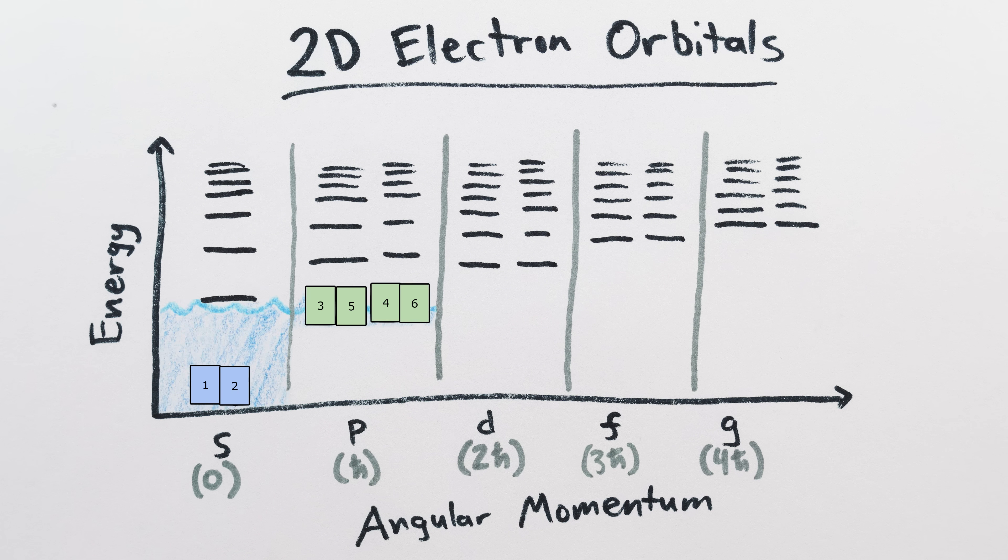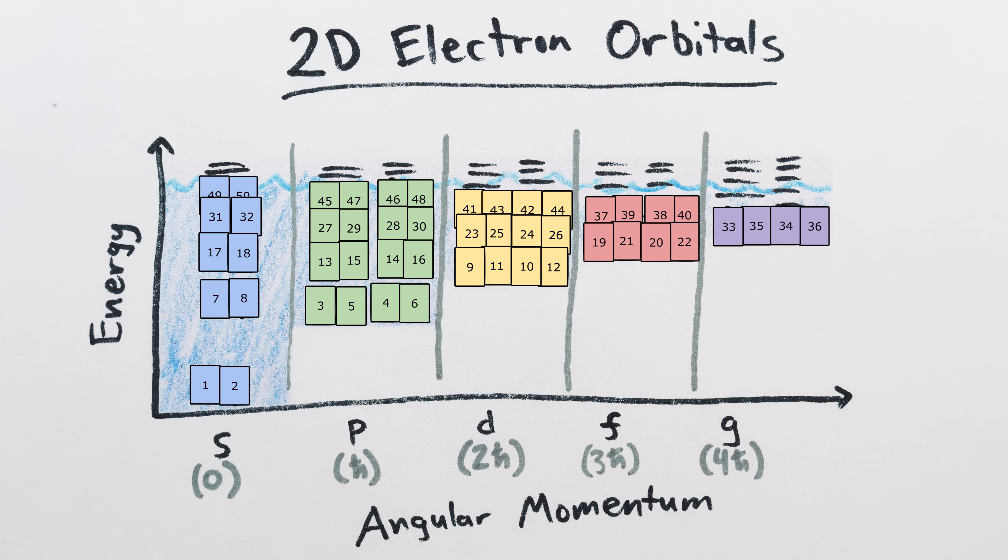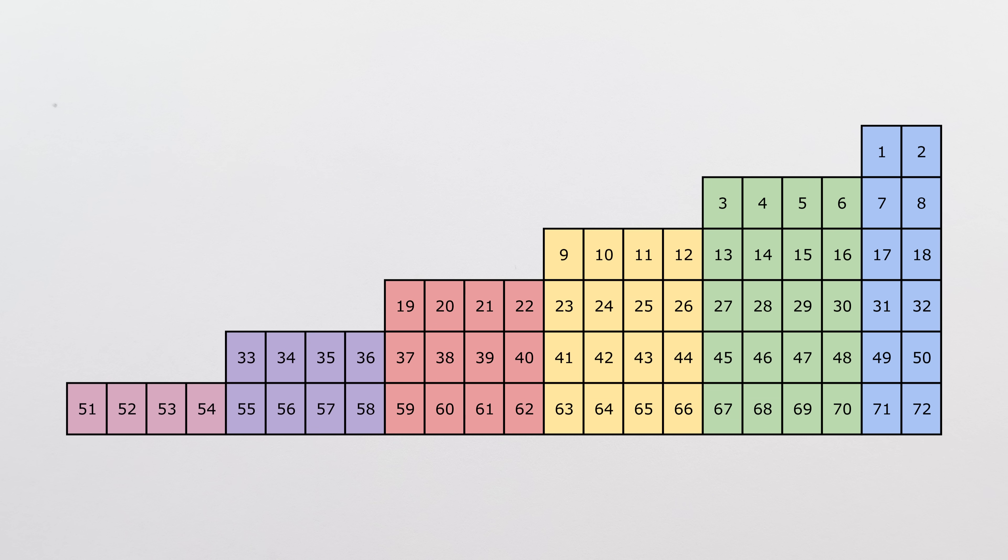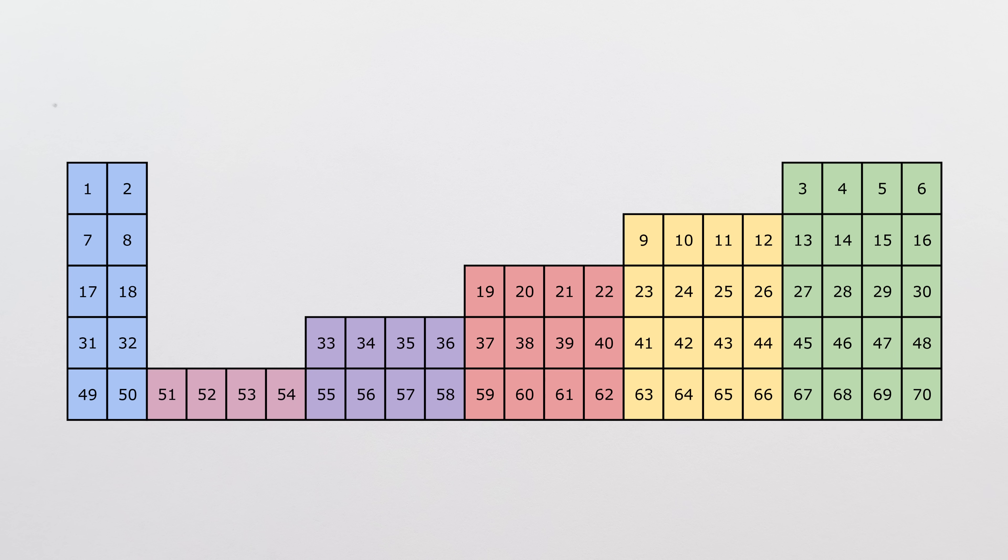If we gradually fill up the 2D orbitals with electrons to see what the outermost orbit of each element is, the result is a table that looks like this. Or after a slight rearrangement, something more like the typical table for our 3D universe.